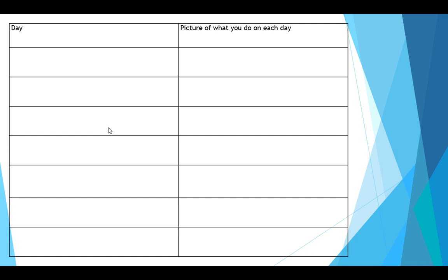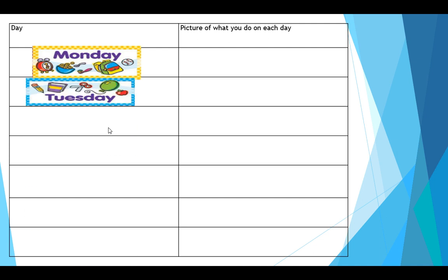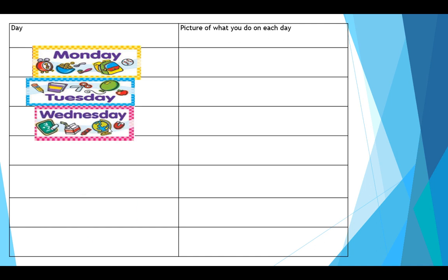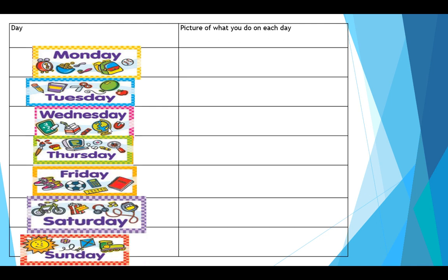Okay, so what did we put for the first day? What day comes first? Well done — it's Monday. What day comes next? Tuesday. Well done. Then Wednesday. And Thursday. Fabulous. Friday. Saturday. Sunday. And in your boxes you should have drawn a picture of what you do on each day.